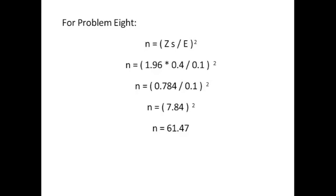Now keep in mind that you cannot have 61.47 respondents. You've either got to round it down or round it up, and you never round it down because if you round it down, you don't have enough. You have to have at least 61.47 for your effect size to be 0.1. So you would round that up and you would say n equals 62.